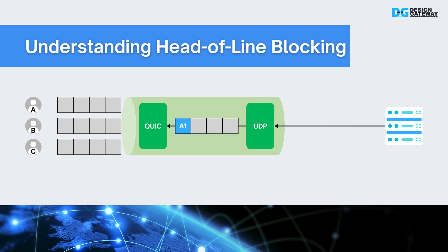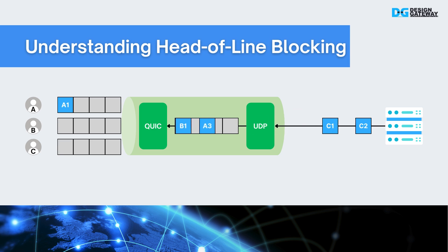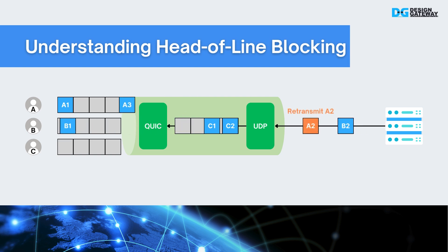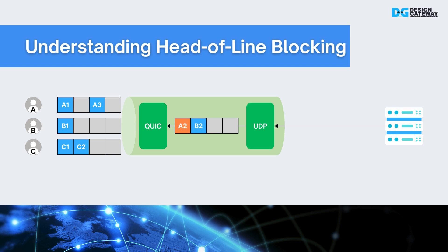This issue can be solved by using QUIC with UDP. Data packets are not required to be received in sequence in a UDP connection, so if packet A2 is lost and the next packets B1, A3, C1, and C2 are successfully received, all received packets can still be sent to QUIC for processing. In this case, users B and C can process B1, C1, and C2 without being blocked by the lost A2. When the receiver gets the retransmitted packet A2, UDP sends the data to QUIC, which decrypts the packet and manages the payload of packet A2 into the correct memory position.